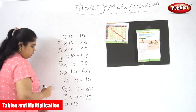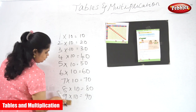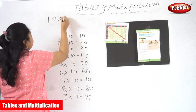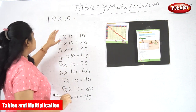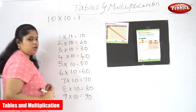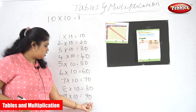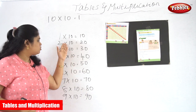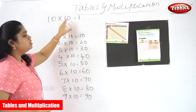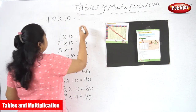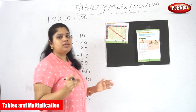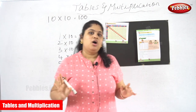For 10 into 10: the number is 1, and we look at how many zeros are present. There is one zero in 10. But here we have 10 multiplied by 10 — both have one zero each, so there are two zeros in total. So 10 into 10 equals 100. That is how the 10th table works for this special case.